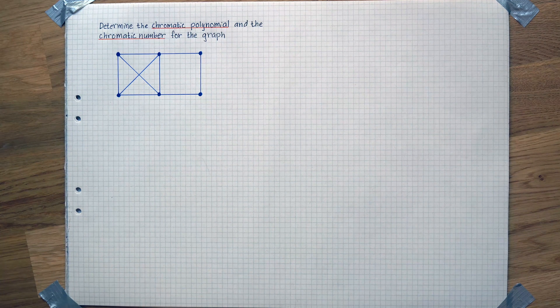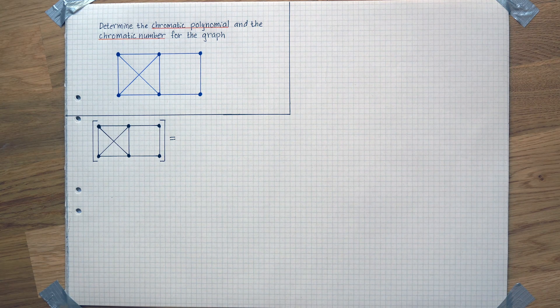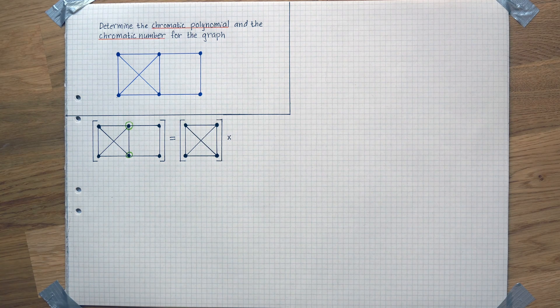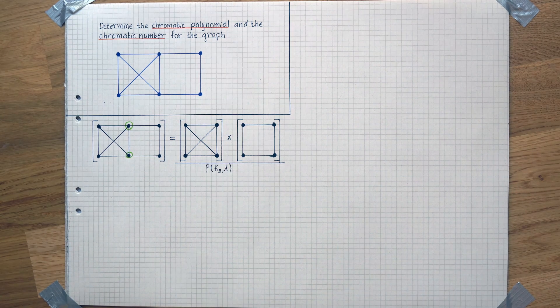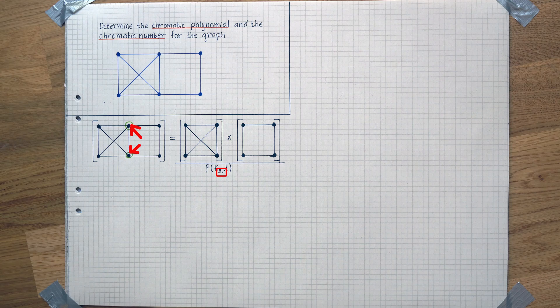We want to determine the chromatic polynomial and the chromatic number for the graph. Start by separating the graph in these two points. You're allowed to do that if you then multiply the two parts and divide them by this, where the two represents the number of nodes you divide the graph in.